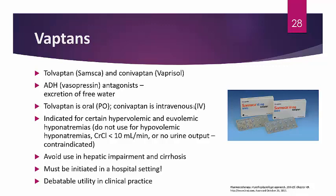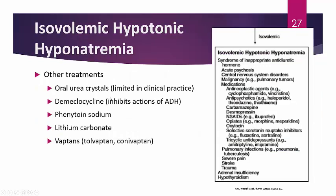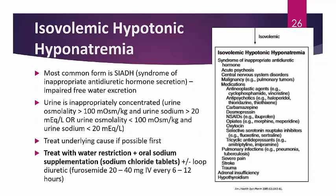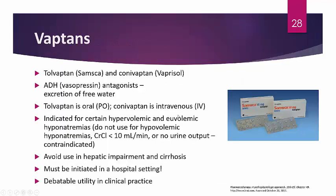Tolvaptan has about 50–55% bioavailability, so if GI absorption is poor, consider IV conivaptan. Most patients tolerate tolvaptan well enough for an adequate effect. Vaptan agents are indicated only for certain hypervolemic and euvolemic hyponatremias — do not use in hypovolemic hyponatremia. If you're flushing out free water in a hypovolemic patient, you're worsening the problem rather than fixing it.